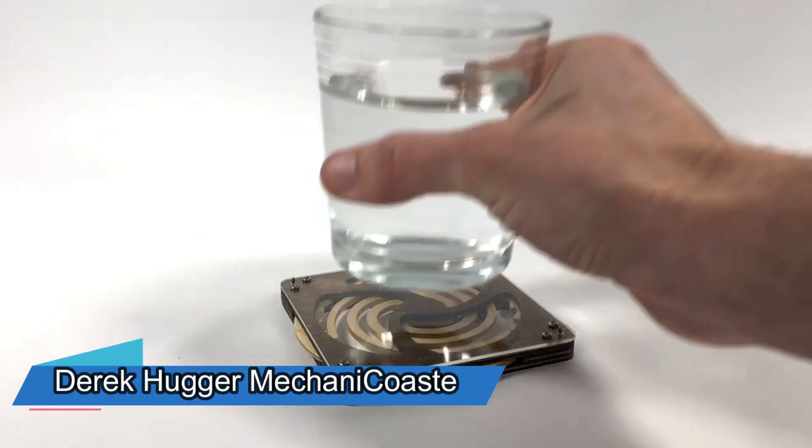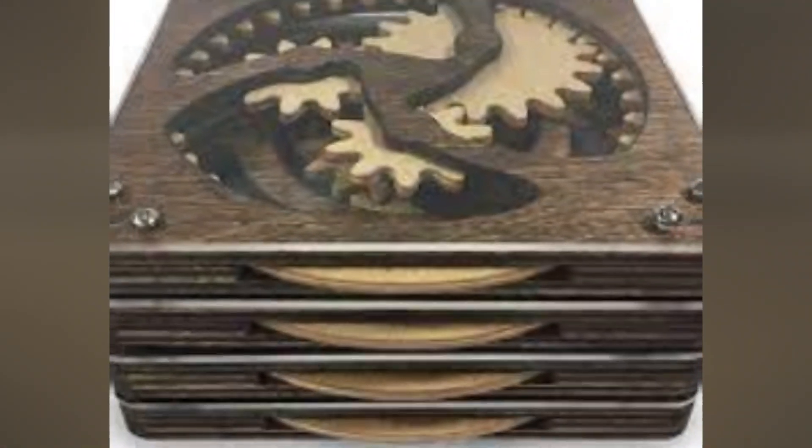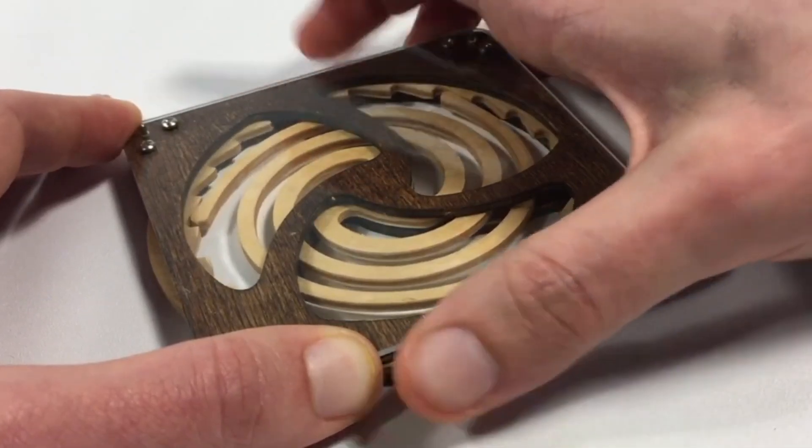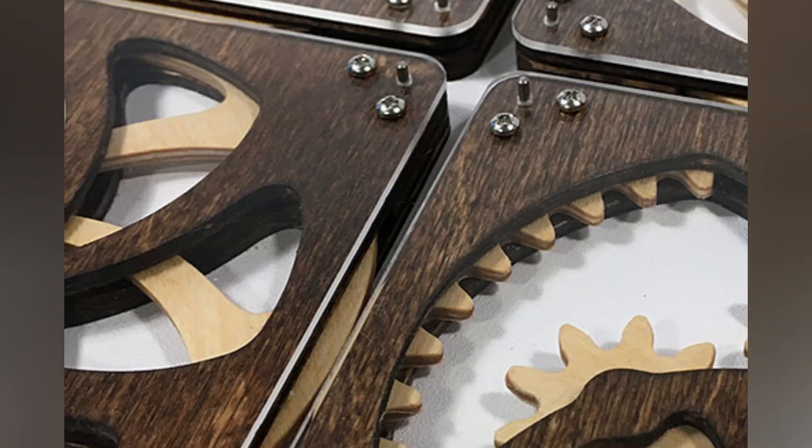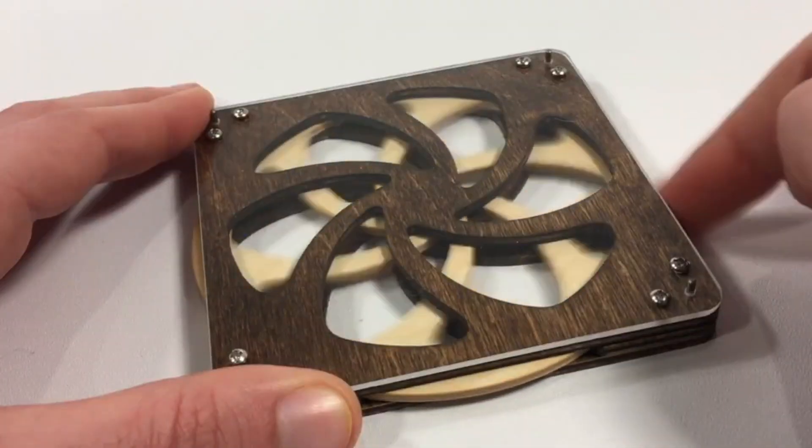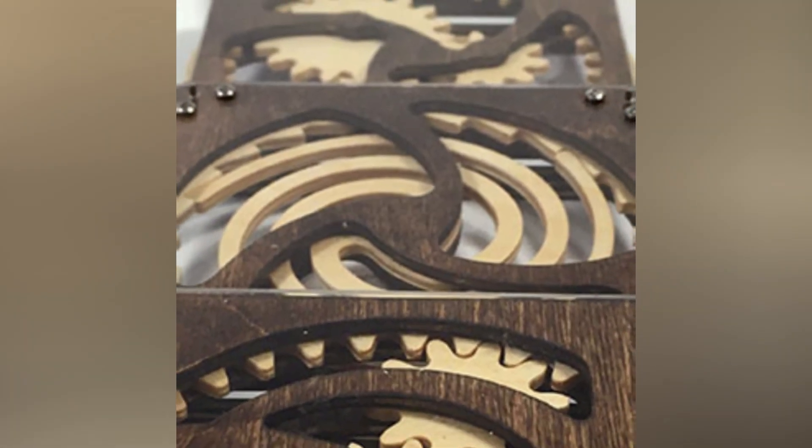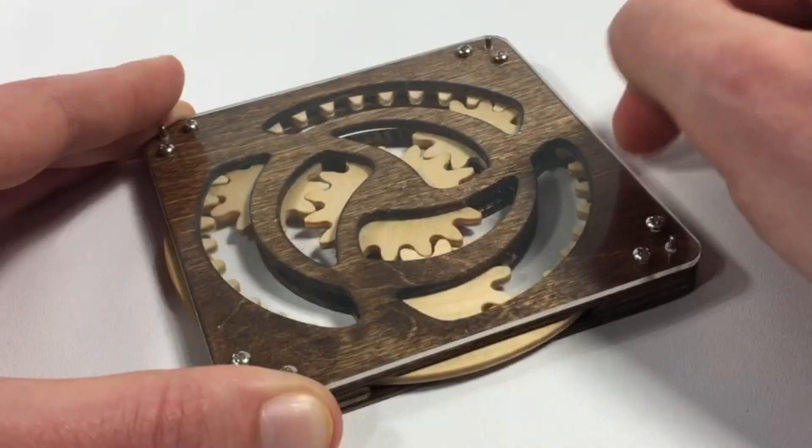Explore these coasters with fascinating mechanical movements. Simply rotate the outer ring gear and each coaster comes to life. Hear the satisfying clicks as spin ratchets engage and watch radial patterns twirl, capturing your attention. They add a whimsical touch to any table, making each coaster a unique and captivating addition.